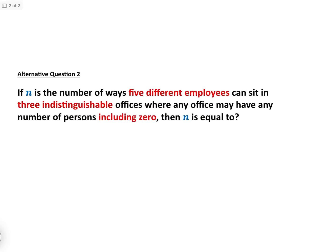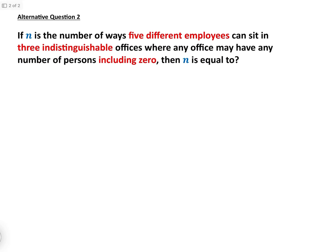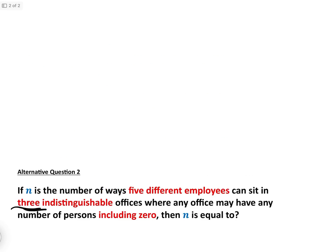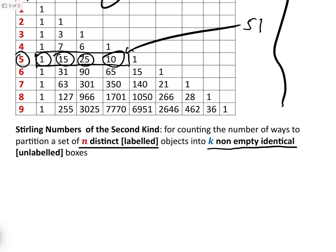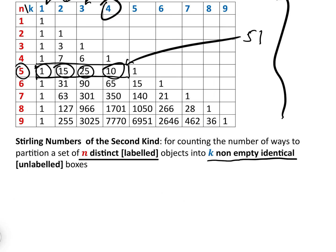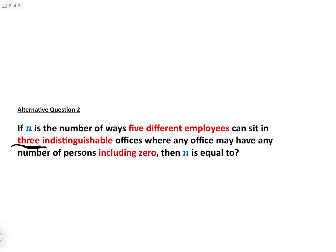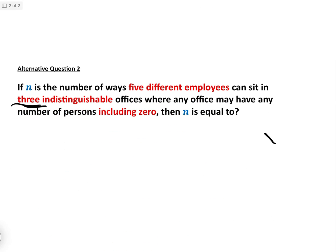Let's briefly do another question. Alternative question 2 is basically identical to the question we've just done, except there are three indistinguishable offices instead of four. If we have the Stirling numbers of the second kind table, we can say the answer is S(5,1) plus S(5,2) plus S(5,3), which is 1 plus 15 plus 25, equaling 41. So by inspection, the answer to that is 41.